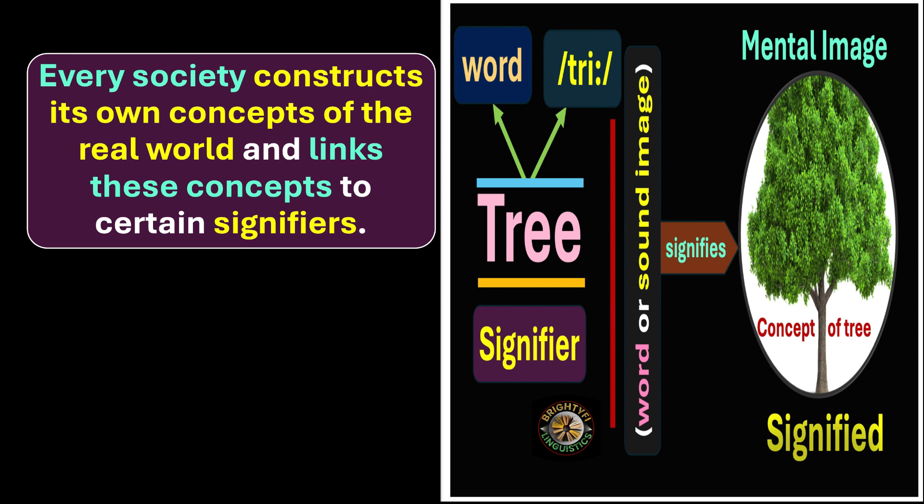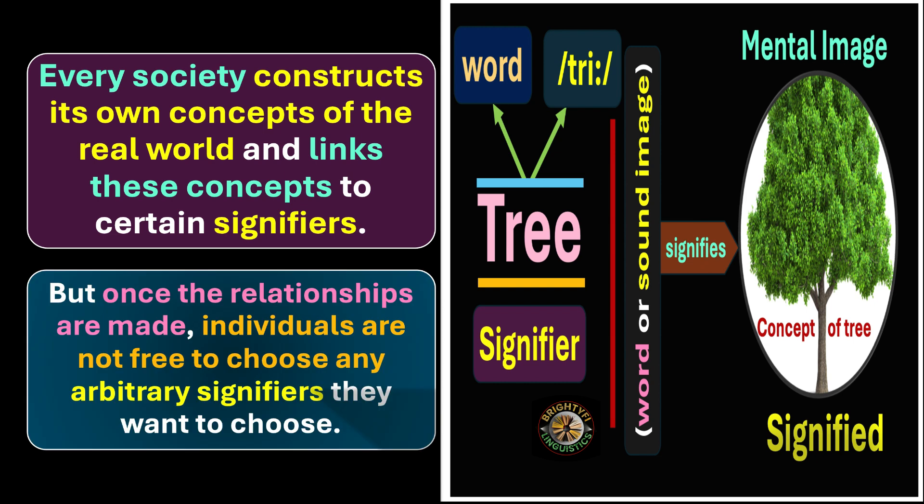That is why we say the relationship between the signifier and the signified has no logical basis — it is arbitrary. But once the relationship is made, individuals are not free to choose any arbitrary signifiers they want. Once you establish this relationship, we have to accept it as a social fact, and we use it frequently to communicate with people. That is how the linguistic sign is formed.